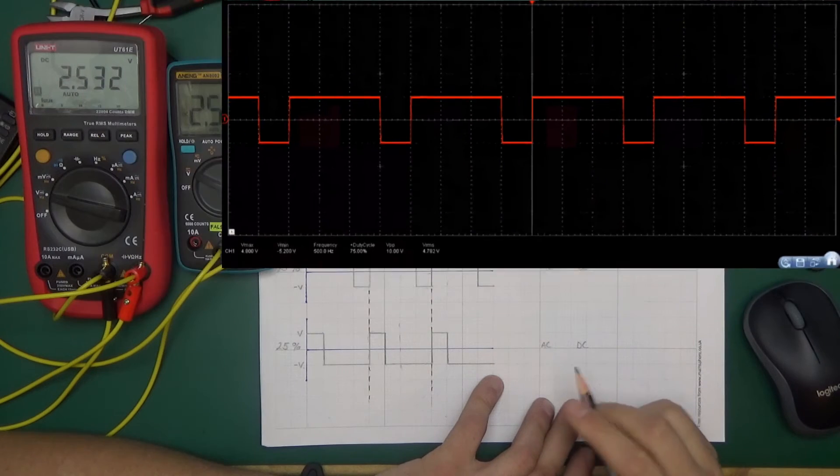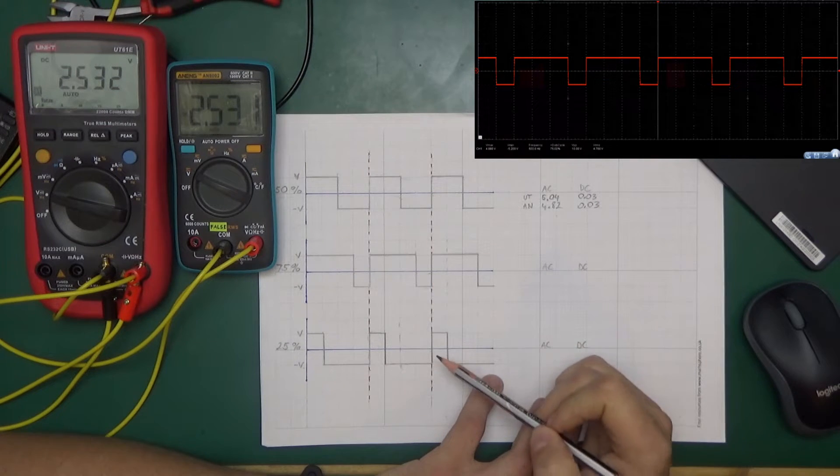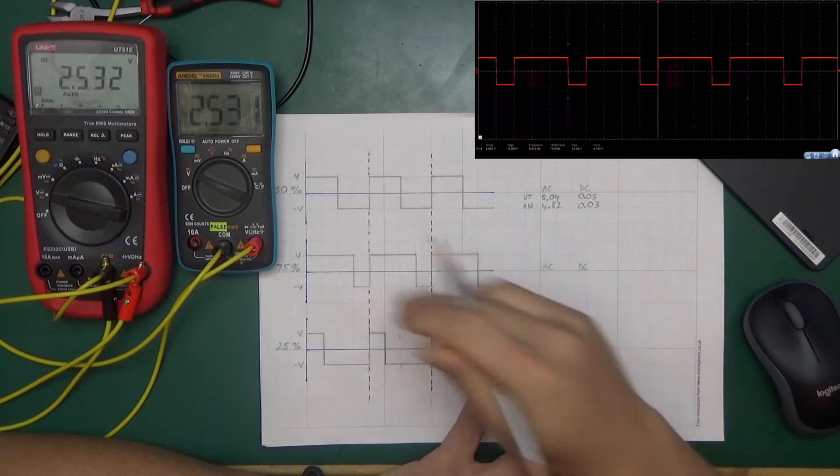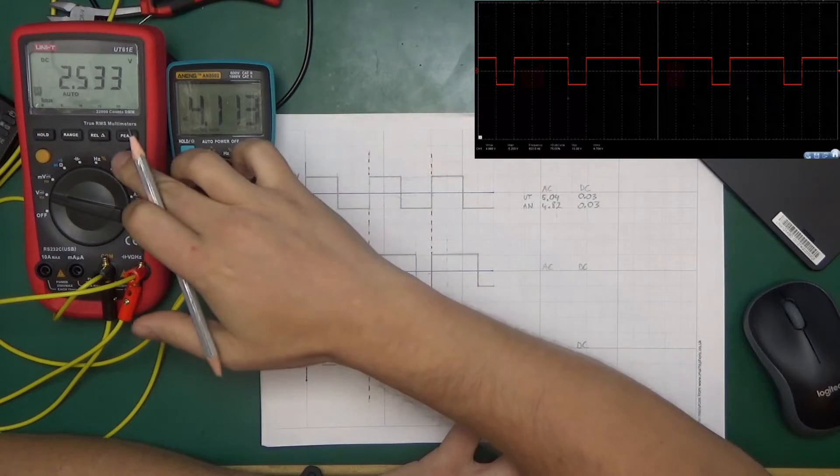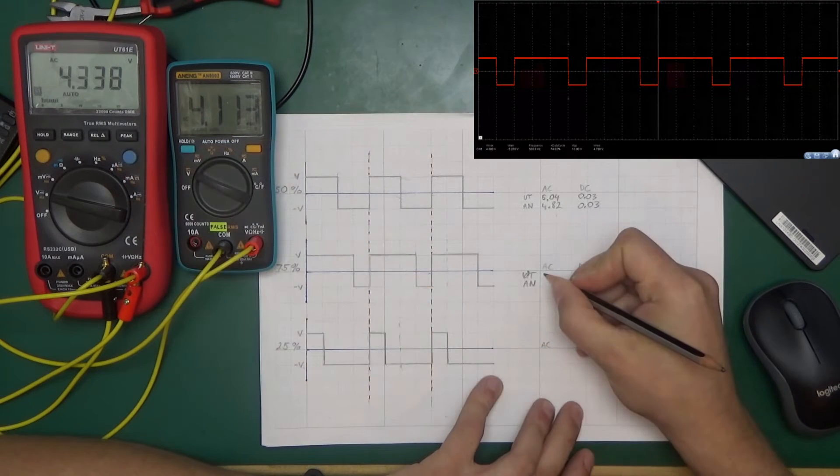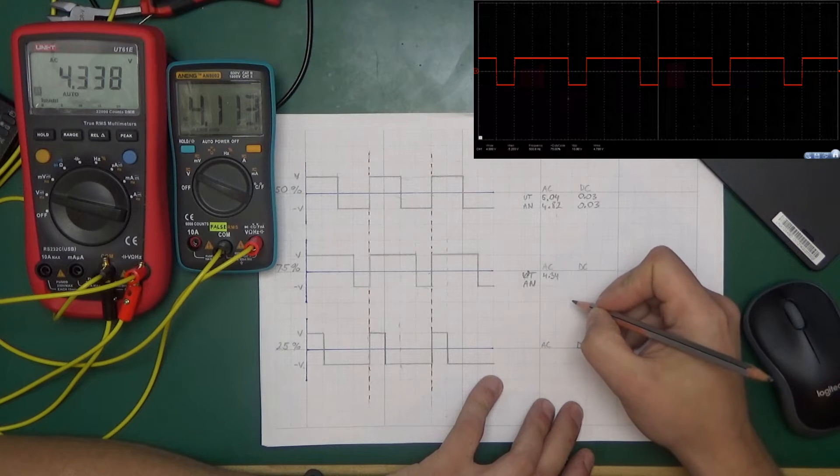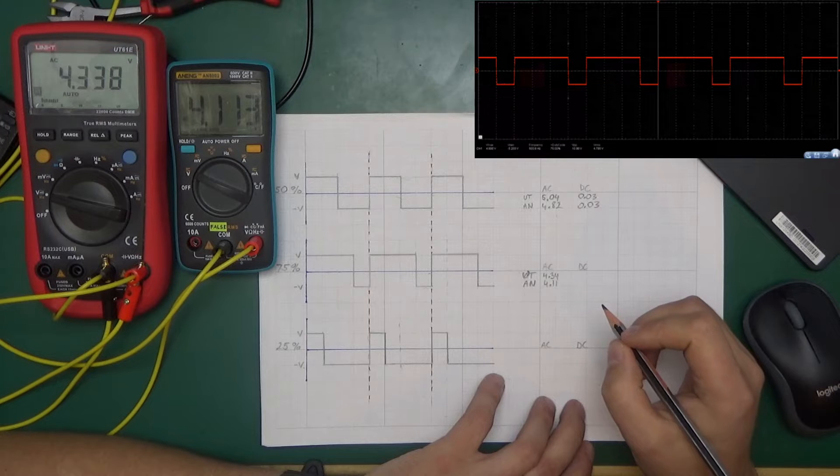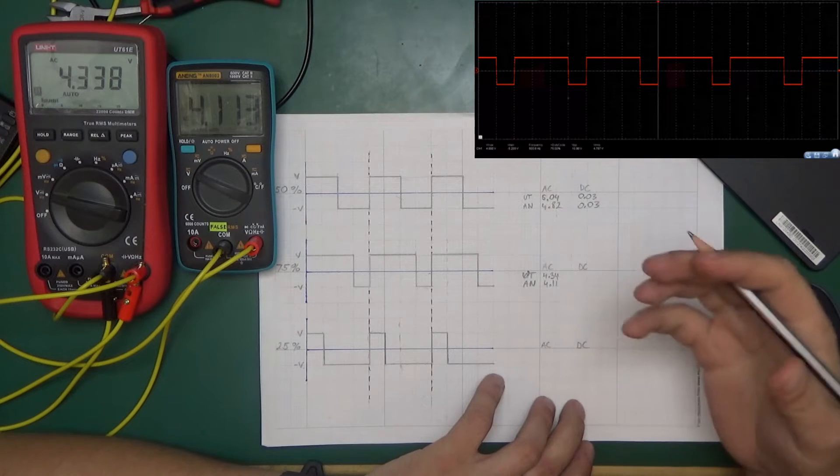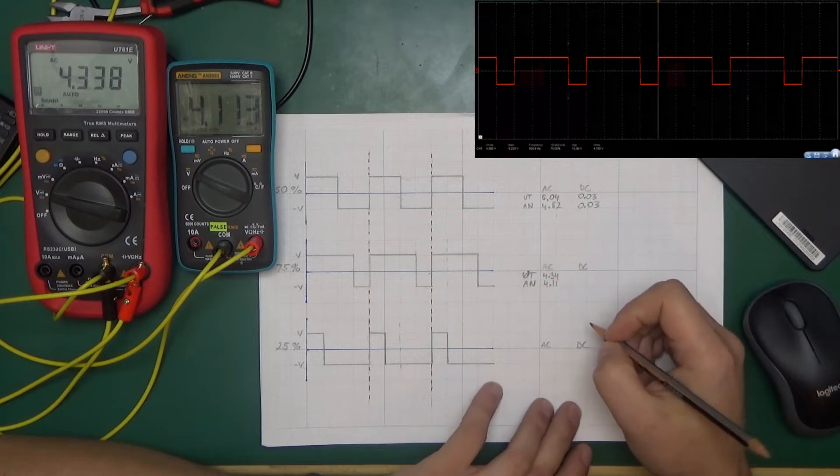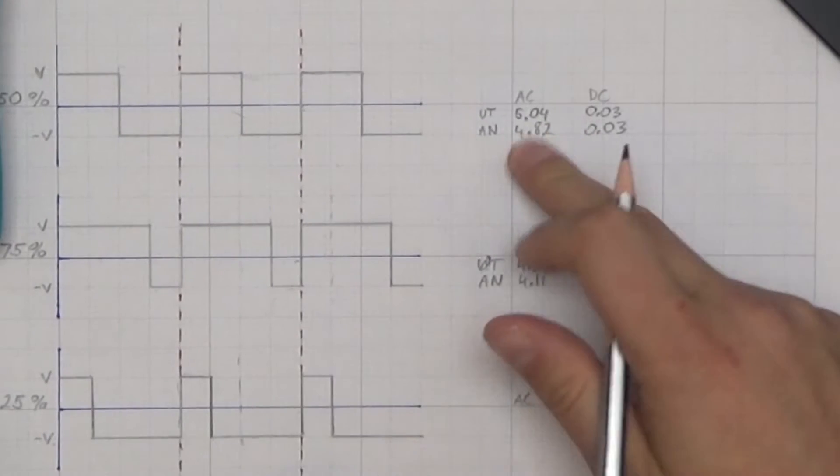So there we go—that's the exact same waveform as here, 75% duty cycle, same frequency. And let's go back to AC RMS. Unity is showing 4.34 and Anang 4.11, so Anang is showing a little bit less than the Unity in both cases, or Unity showing a little bit higher than Anang, whatever is the case.